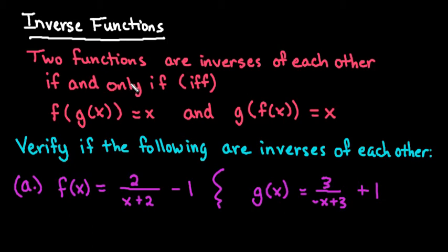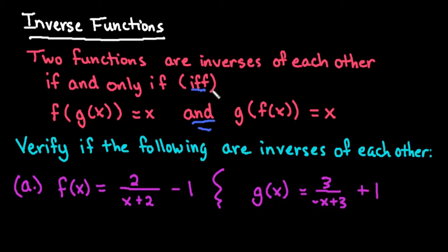For this video we're going to look at inverse functions. Two functions are considered to be inverses of each other if f of g of x equals x and g of f of x equals x. This is true if and only if both of them are true. In mathematics, IFF stands for if and only if — it's the shorthand notation for that.